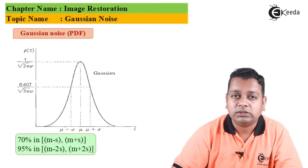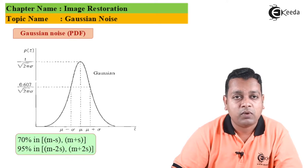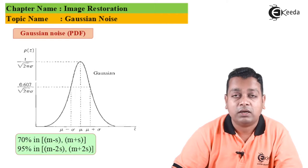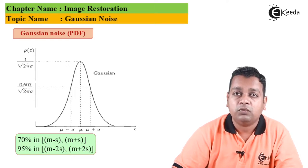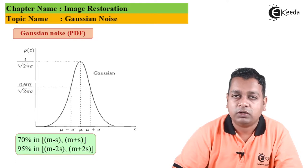Regarding the Gaussian noise PDF represented graphically, we can take two axes: the axis having the parameter z representing the random variable, and the PDF represented by p(z). We get this kind of curvature which is called a Gaussian function or simply Gaussian noise.